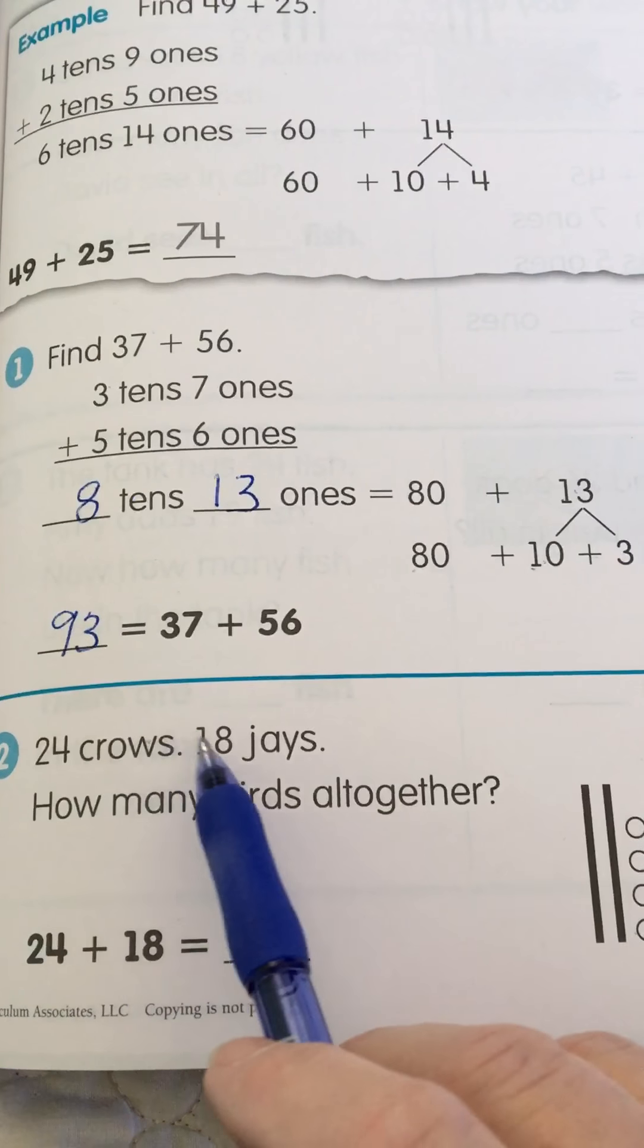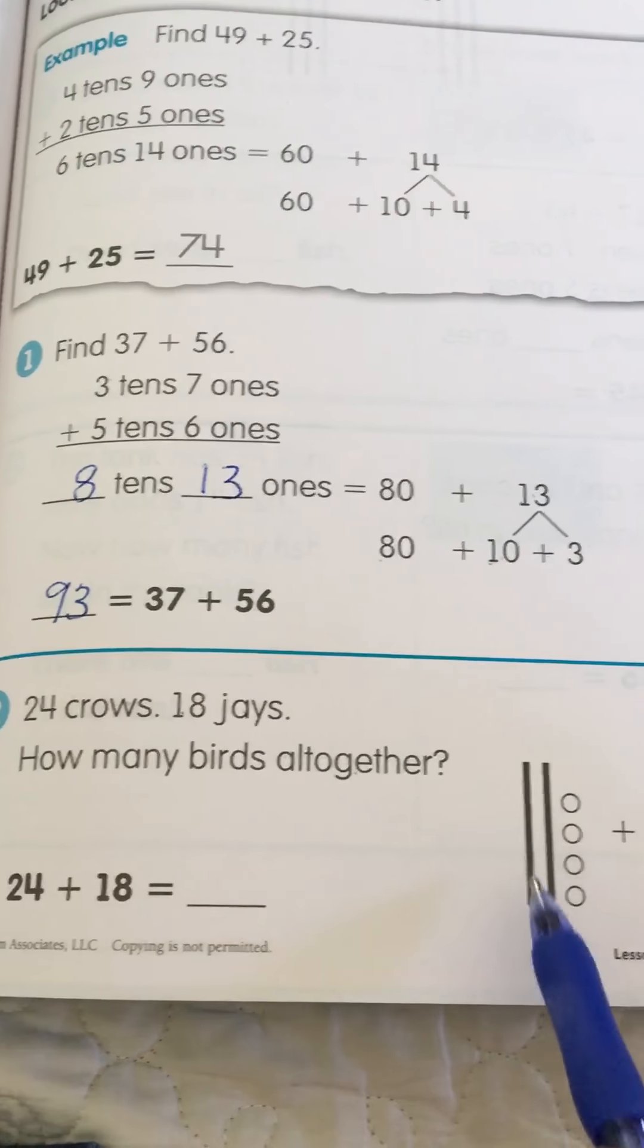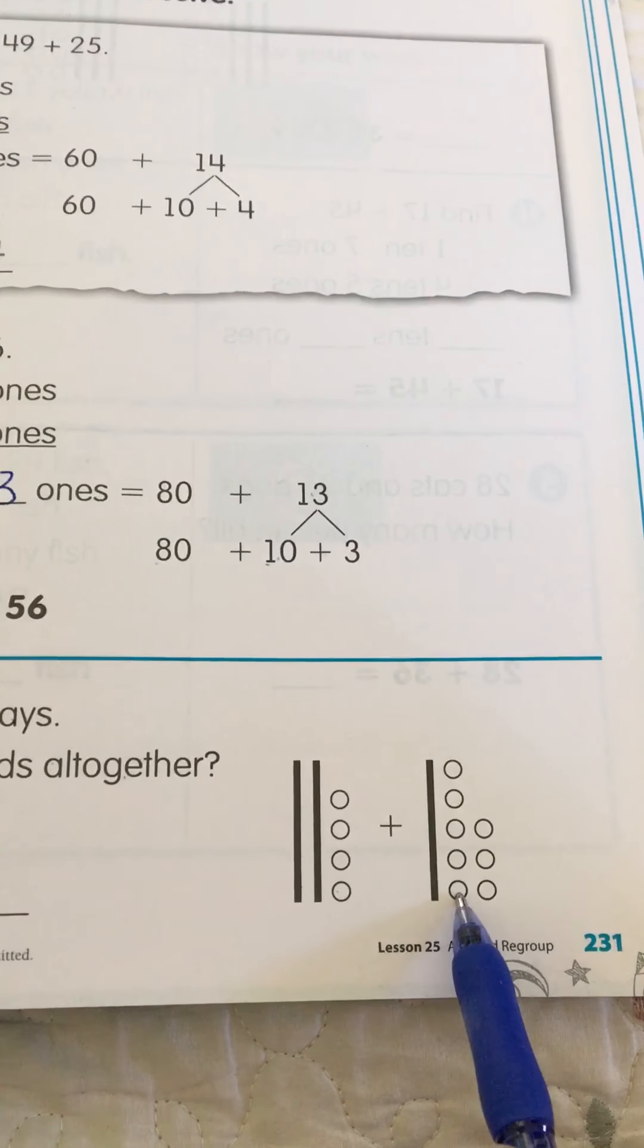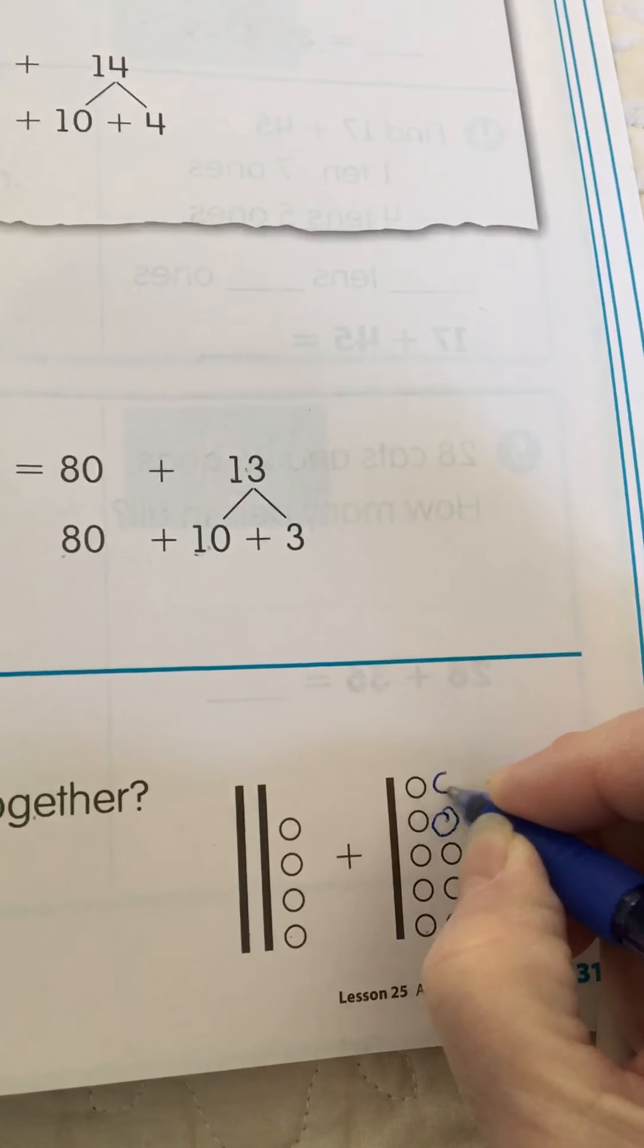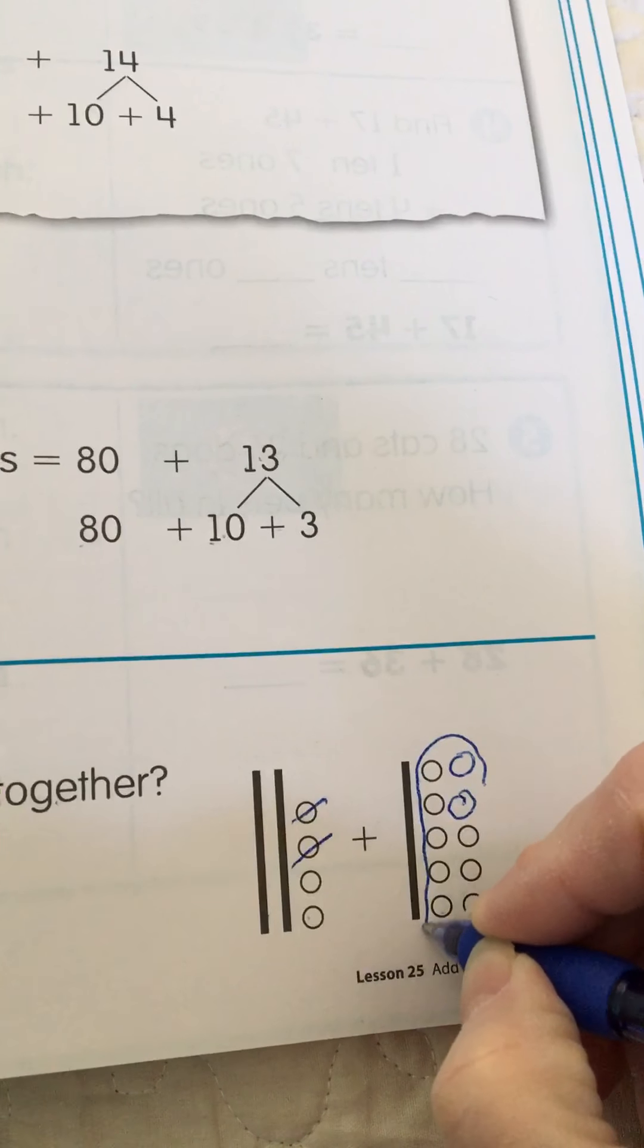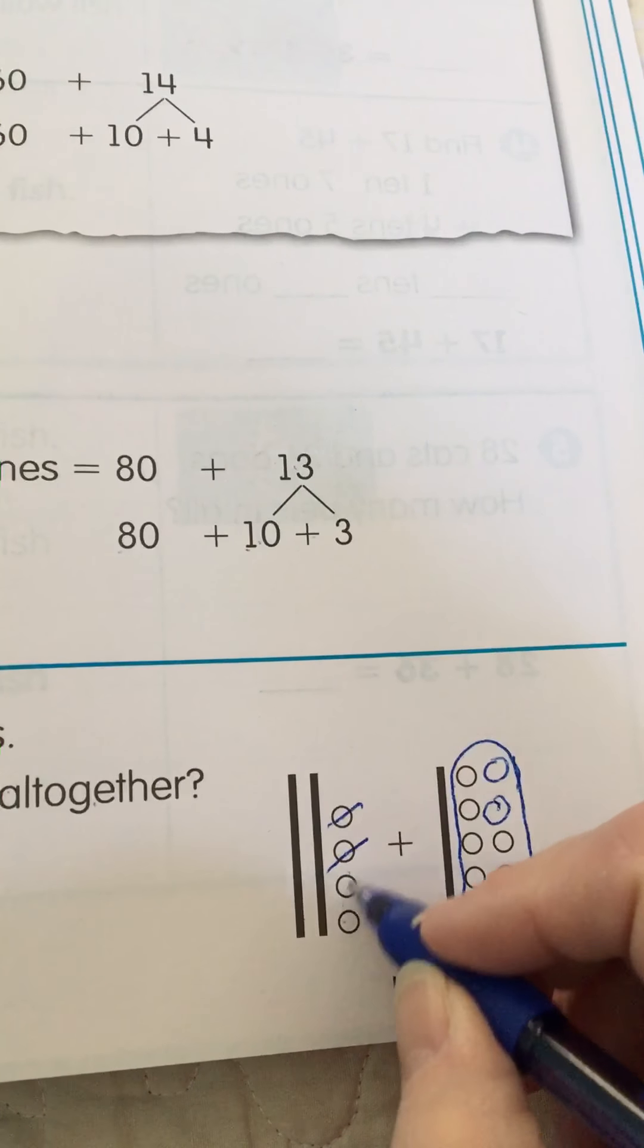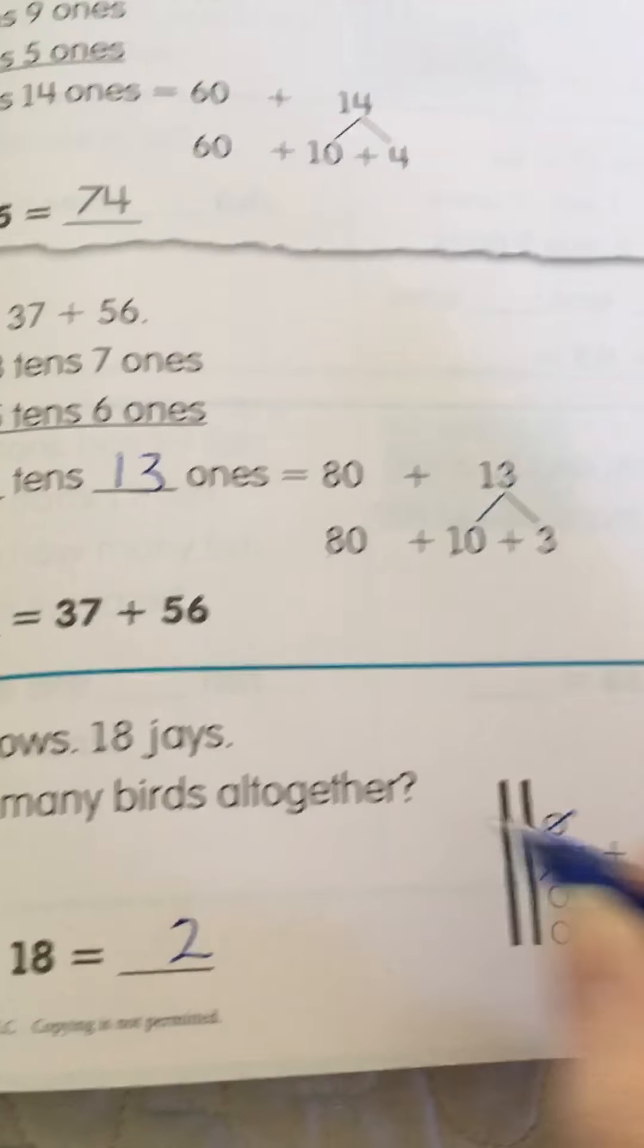24 crows and 18 jays. How many birds all together? Here we have 24. And then we have 18. So what we're going to do is make a ten. We're going to put two over there. And remember we have to mark them out. So this is a ten. So we have how many ones? Two ones.